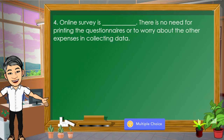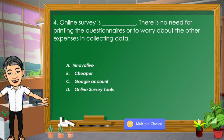Number 4: Online survey is blank — there is no need for printing questionnaires or worrying about other expenses in collecting data. The choices are: A. Innovative, B. Cheaper, C. Google account, D. Online survey tools. The correct answer is letter B.